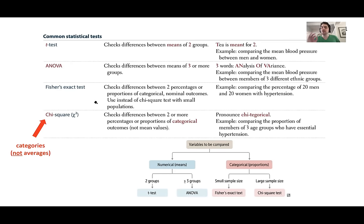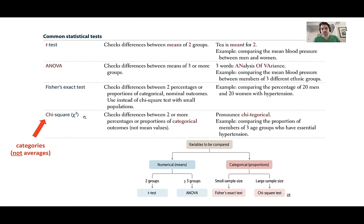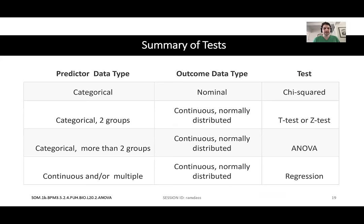If you're talking about categories with no averages involved, you use the Chi-squared test. The easiest way: ask yourself, are they looking for a mean? Yes — how many variables? Two: T-test. More than two: ANOVA. If it's categorical with no averages, use Chi-squared.